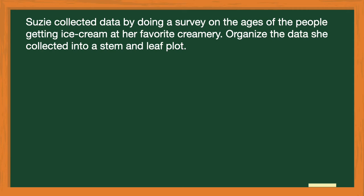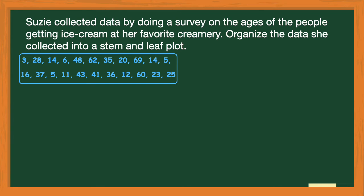Now let's look at our real-world problem. I went to my favorite ice cream store and collected data on the ages of people getting ice cream — I just randomly wrote down their ages. So I have all sorts of numbers in random order: 3, 28, 14, 6, 48, and so on. When you look at information like that, it's really hard to make sense of it because it's not organized. That's what a stem and leaf plot does — it helps you organize the information so you can understand more clearly what the typical ages were of the people going to this ice cream shop.